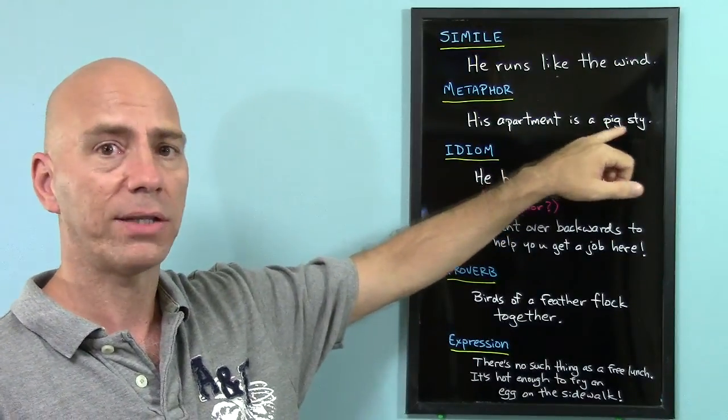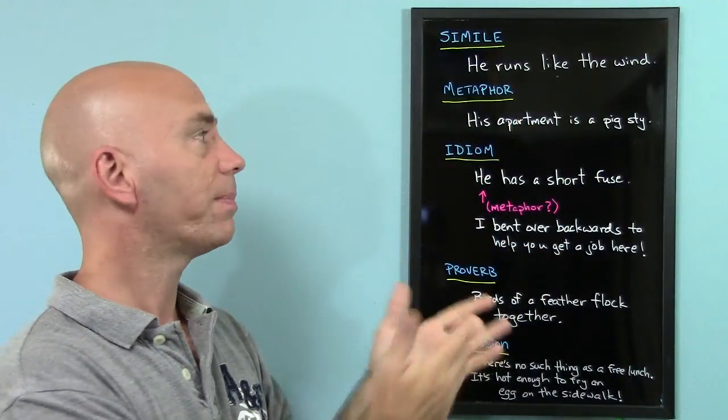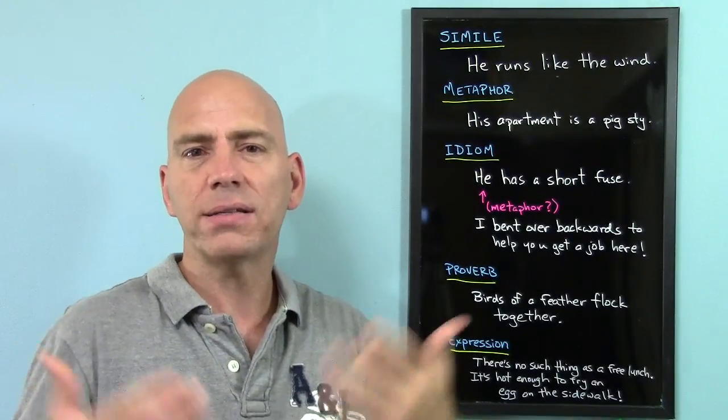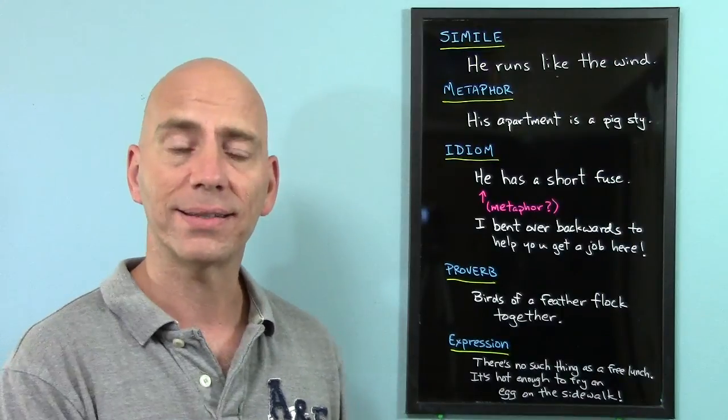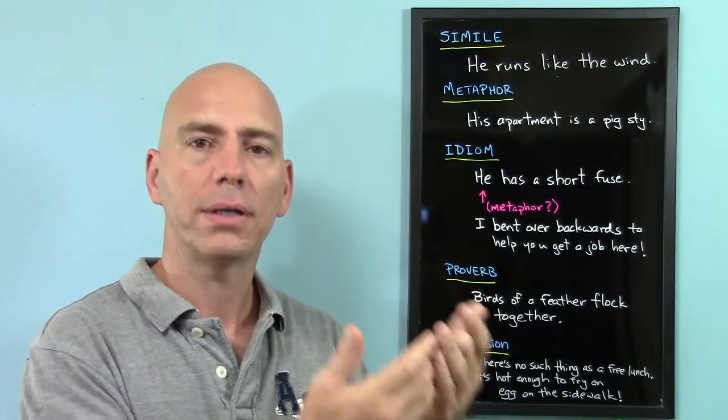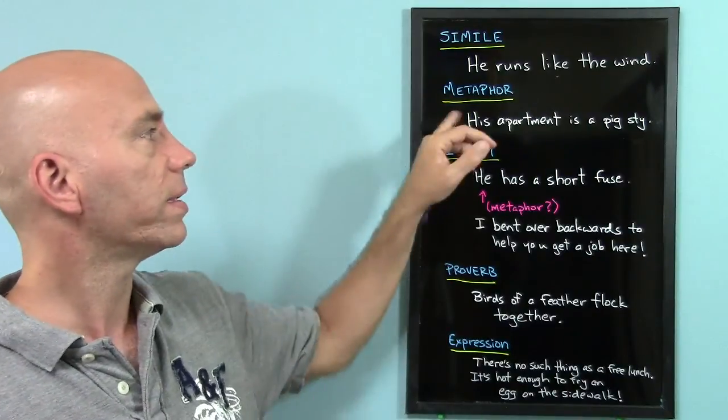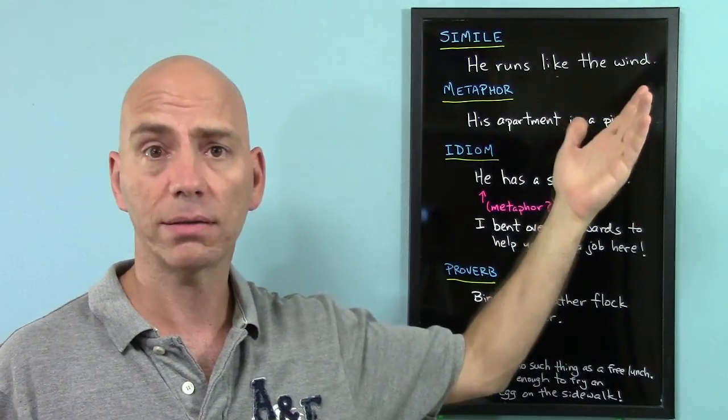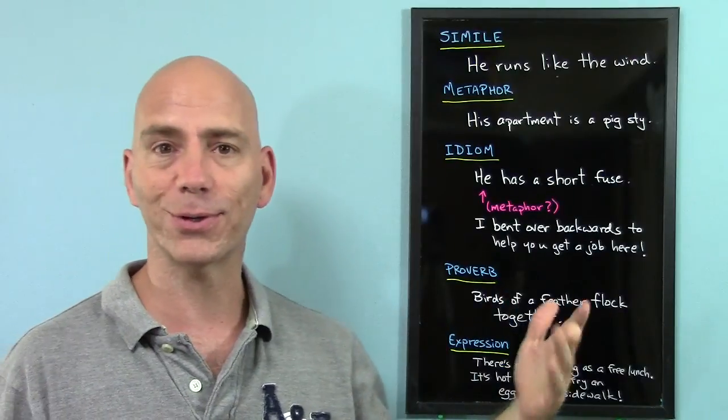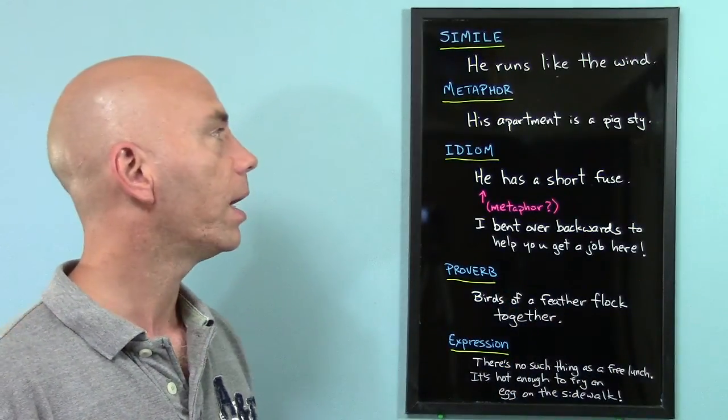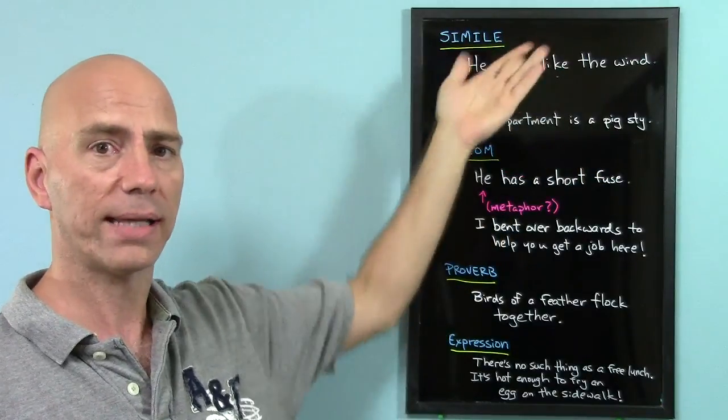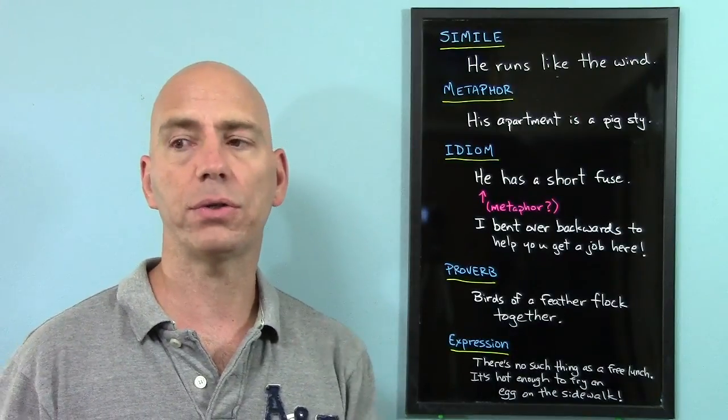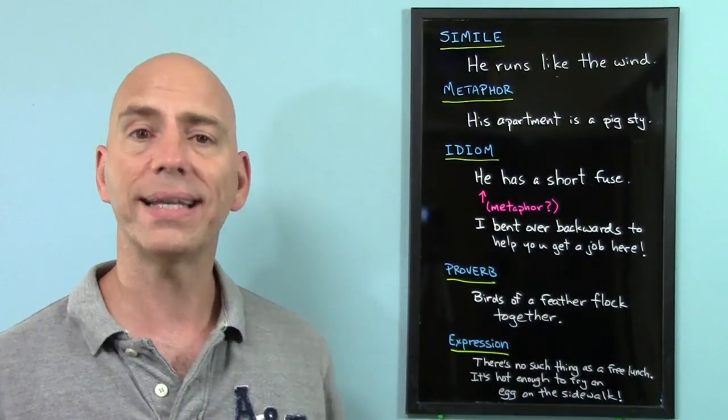I'm using the word pigsty to describe his apartment. Instead of saying his apartment is dirty, his apartment is a pigsty. It adds a little bit more to the sentence than just plain old, his apartment is dirty. So in these two, in similes and in metaphors, the meaning is obvious. You don't need, usually, you don't need to look in a dictionary to understand the sentence. It's clear.